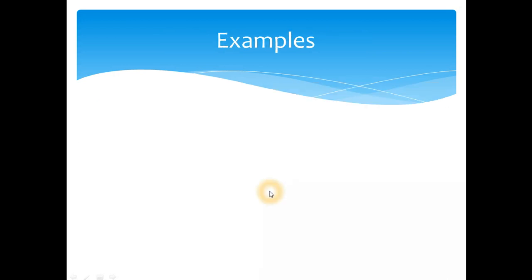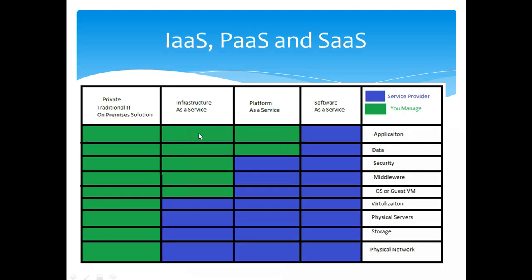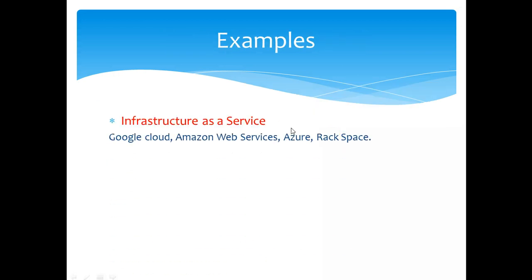Let's go through some examples. Infrastructure as a Service includes Google Cloud, Amazon Web Services, Azure, and Rackspace. The most well-known is AWS — Amazon Web Services — then Google Cloud, then Azure, and then many other providers like OVH and Rackspace.